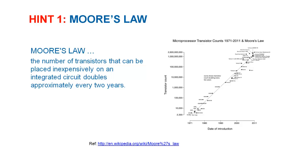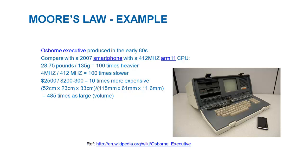This trend is visible in the plot on the screen — you can find more information via the Wikipedia link. If this trend continues, very soon there will be so many transistors available that an engineer cannot intelligently manipulate and take advantage of all of them. Humanly speaking, we cannot manage all those transistors manually.